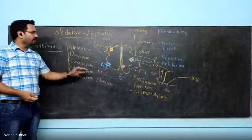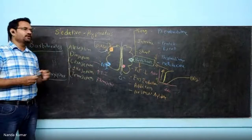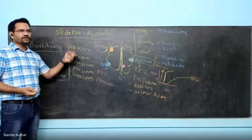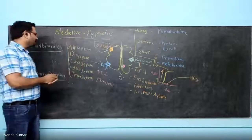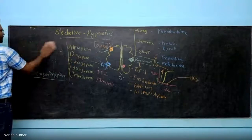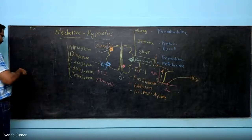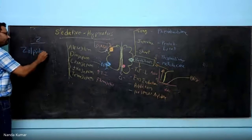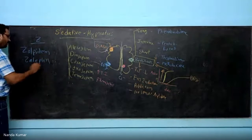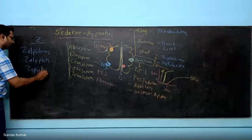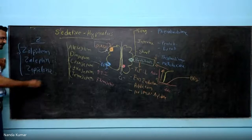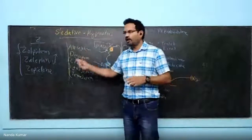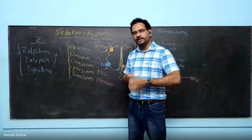For sedative hypnosis, benzodiazepines are the well-known sleeping pills — for example, alprazolam. Along with benzodiazepines, there is one more class known as Z-class drugs, because all of them start with the alphabet Z: zolpidem, zaleplon, and zopiclone. These also act on the benzodiazepine receptor and enhance chloride conduction, but because of their shorter duration of action, they are considered sleep inducers.